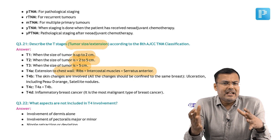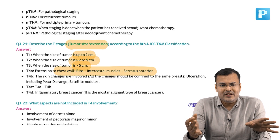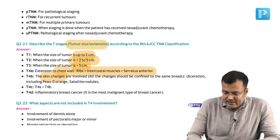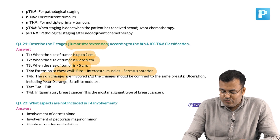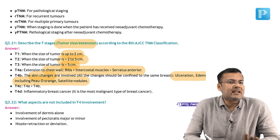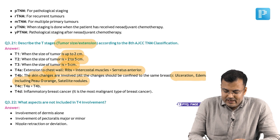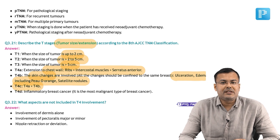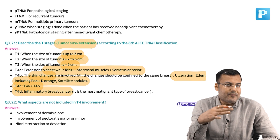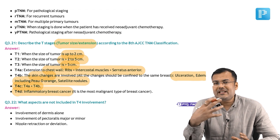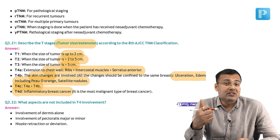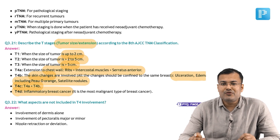Involvement of pectoralis major as well as minor does not affect the stage. In T4B, there are skin changes including ulceration, edema, peau d'orange and satellite nodules. T4C is T4A plus T4B. T4D is inflammatory breast cancer. We saw that it was T4D because there were signs of inflammation — redness involving more than one third of breast skin. The stage was T4D.